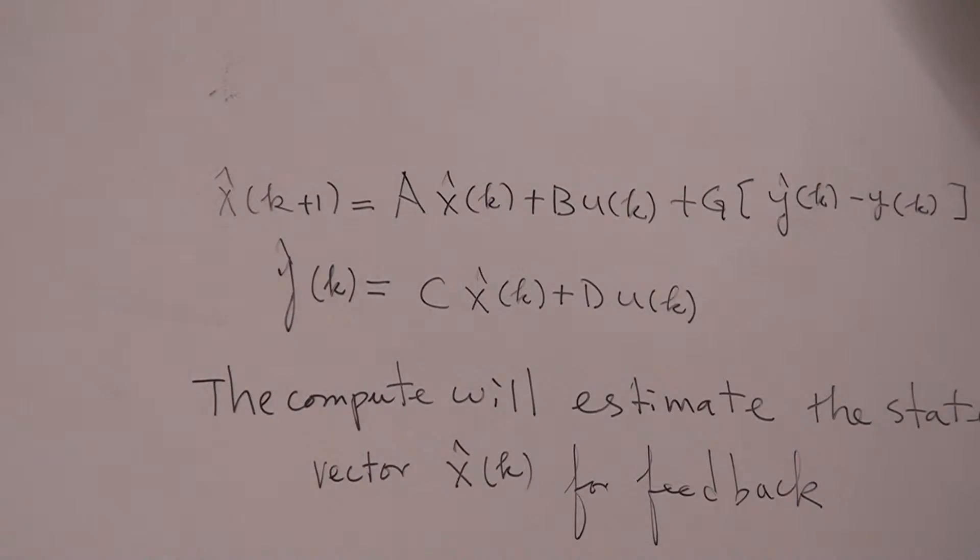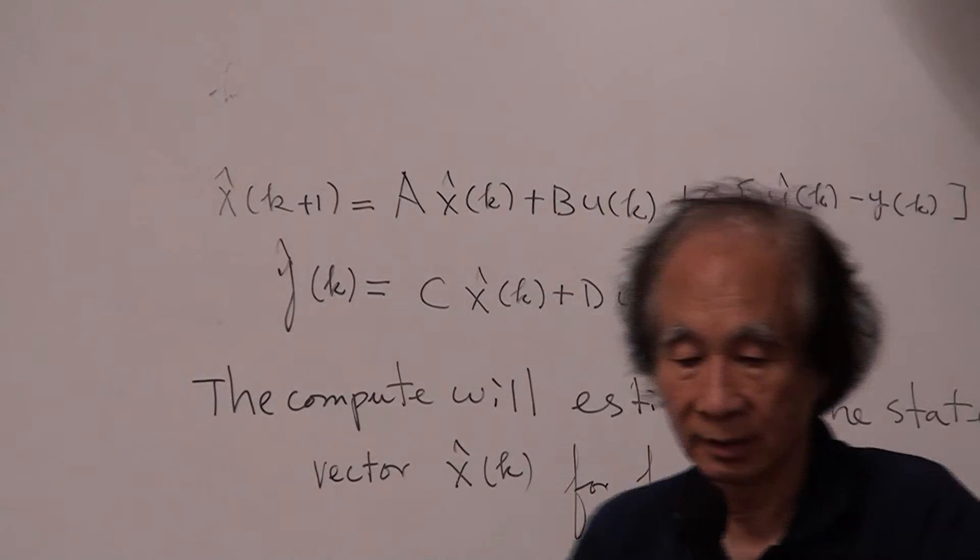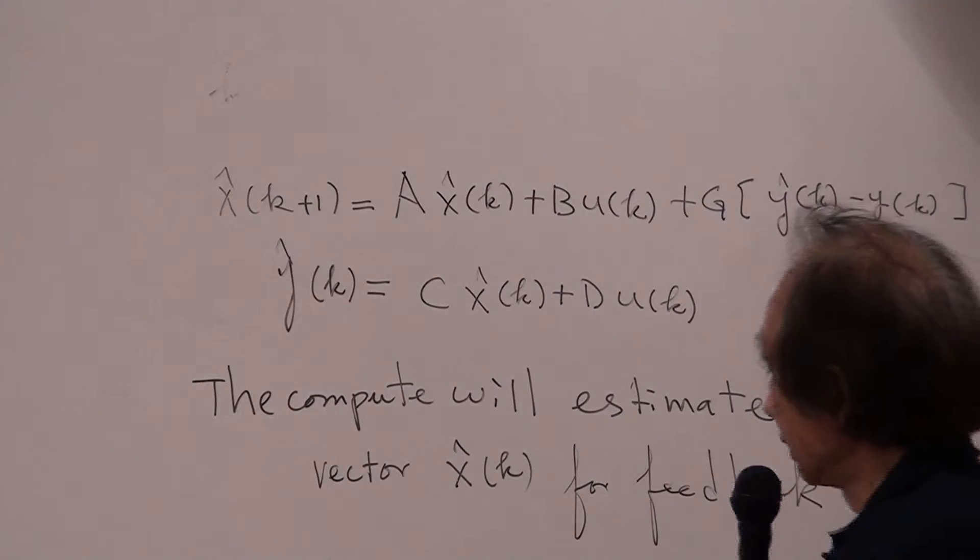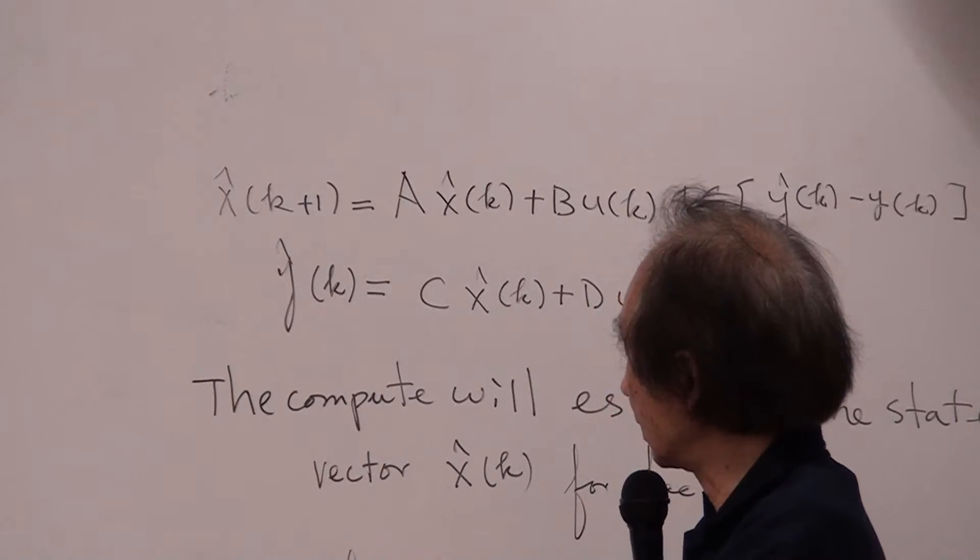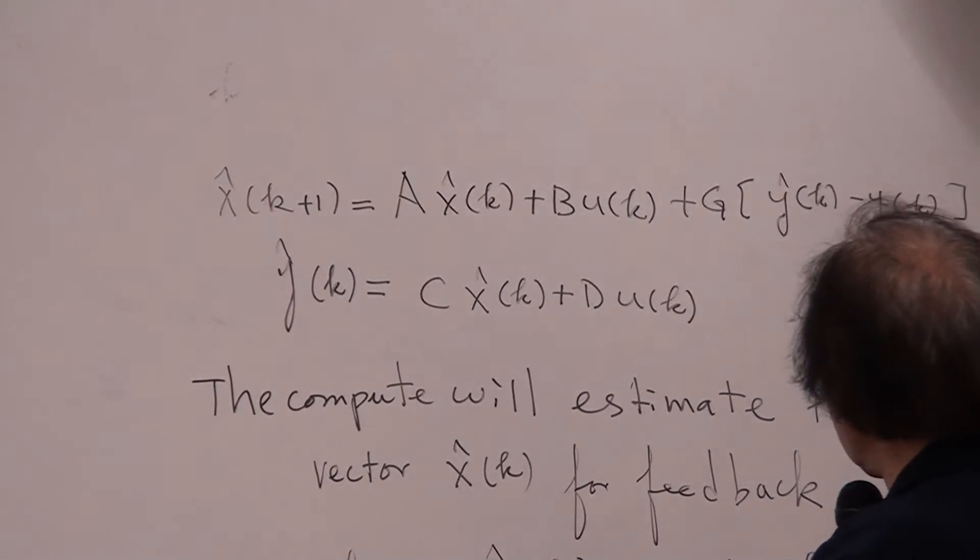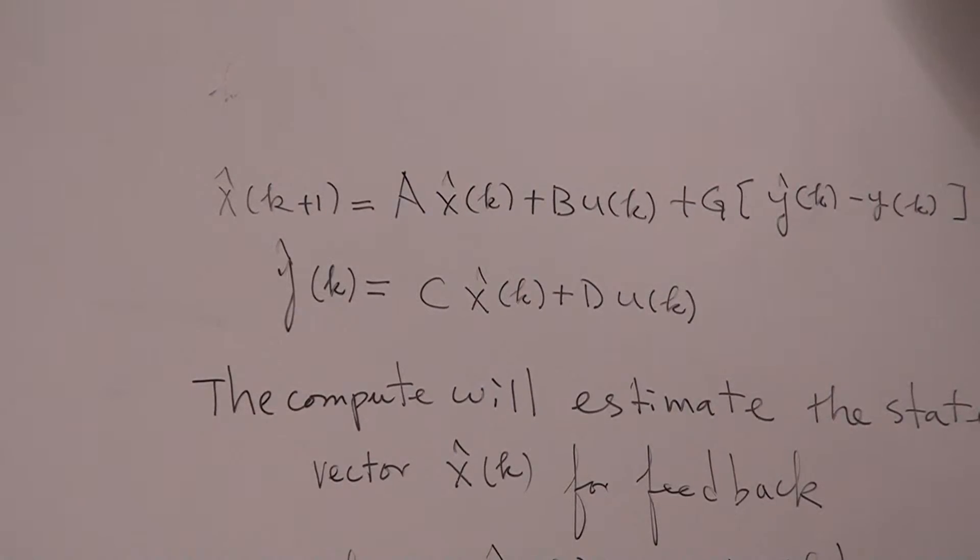It's different from the output feedback. The output feedback, the computer don't estimate. We just compute the virtual system, but this is the estimate state. Now the estimate state in theory, the estimate state will approach to the real state or equal to the real state if everything A, B, C, D are all exact and your G is the observer.